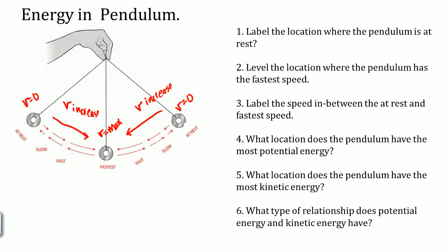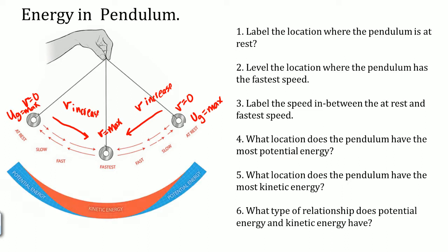What location does the pendulum have the most potential energy? Most potential energy is where the velocity equals zero, so we say U_G is equal to max at those two rest positions. What location does the pendulum have the most kinetic energy? This is where V max is, so this is going to have the most kinetic energy.